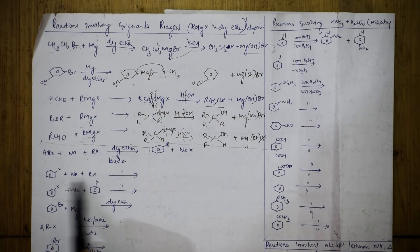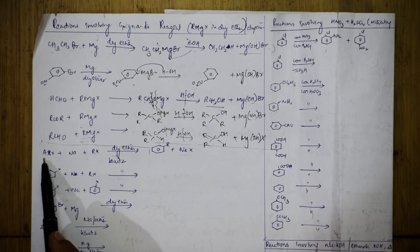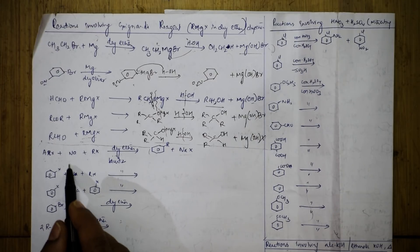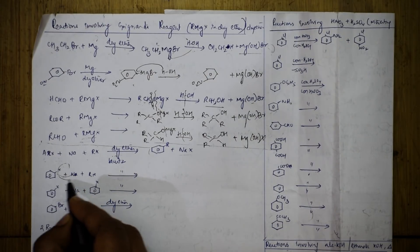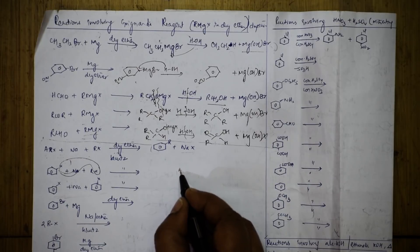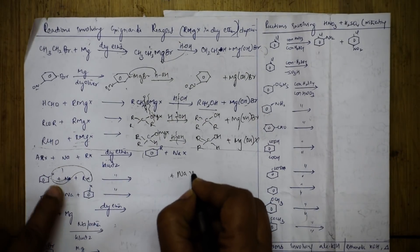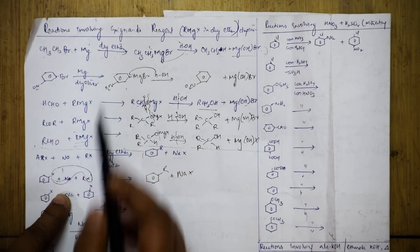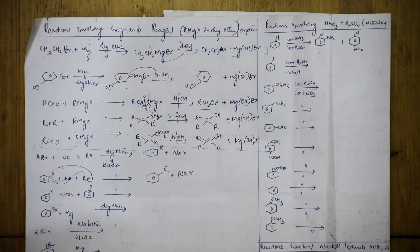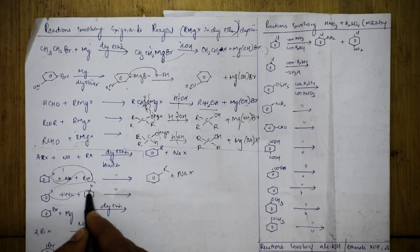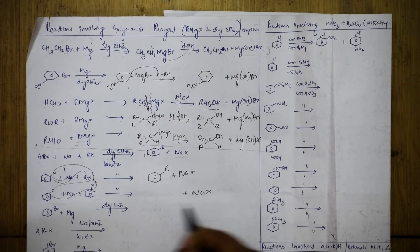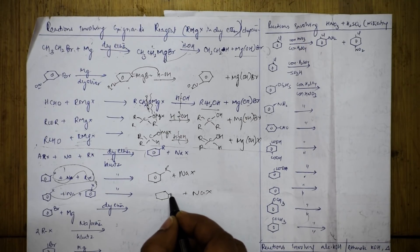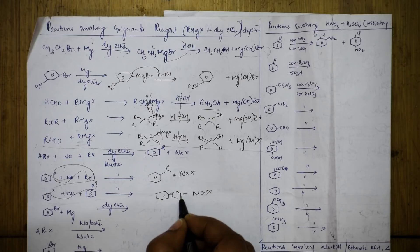Now, here you have one more reaction. Most students get confused when they see 'Ar' - it is only the aryl group, there is a benzene ring. What will happen? Your NaX is out. So NaX comes out and the same compound R is formed. I have taken this step because this is magnesium dry ether, and this is sodium dry ether.